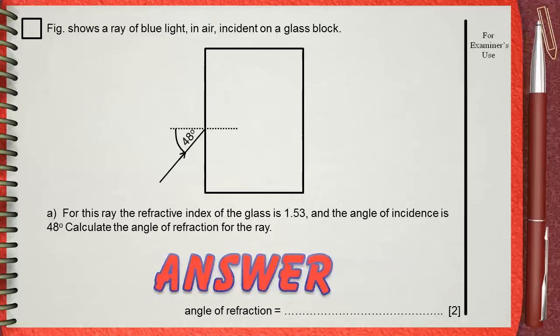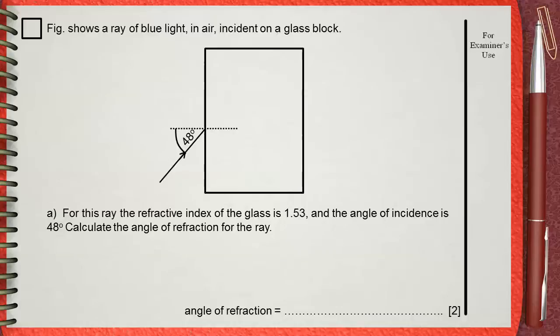This question is well known and frequently asked. We can use refractive index equals sine the angle in air, which is the angle of incidence in this case, divided by sine the angle in glass, which is the angle of refraction in the question.